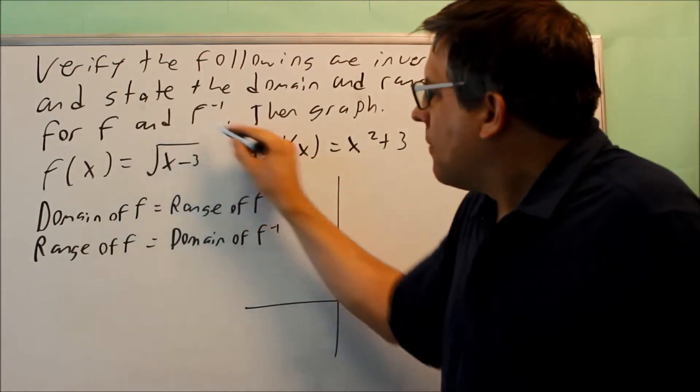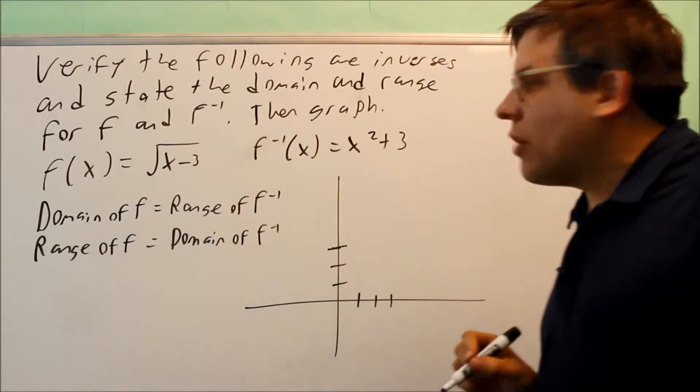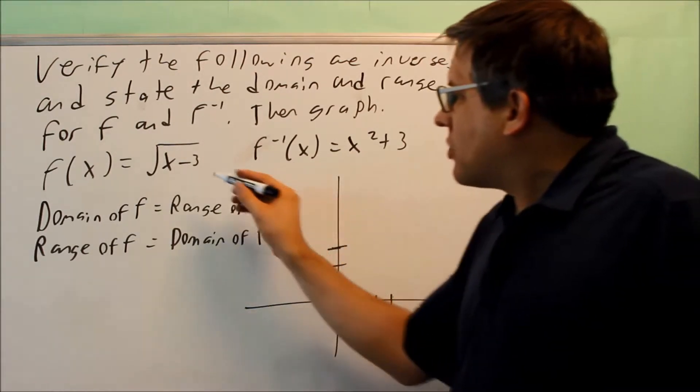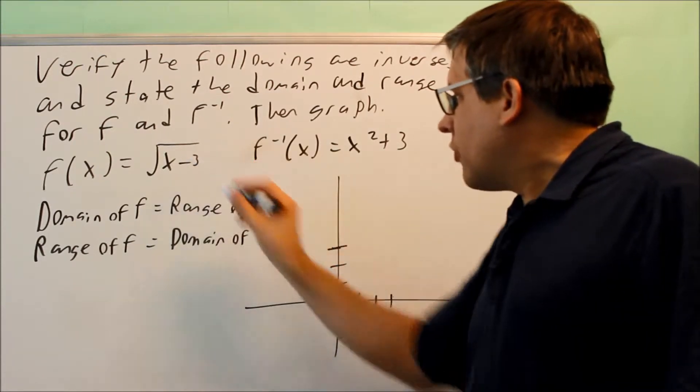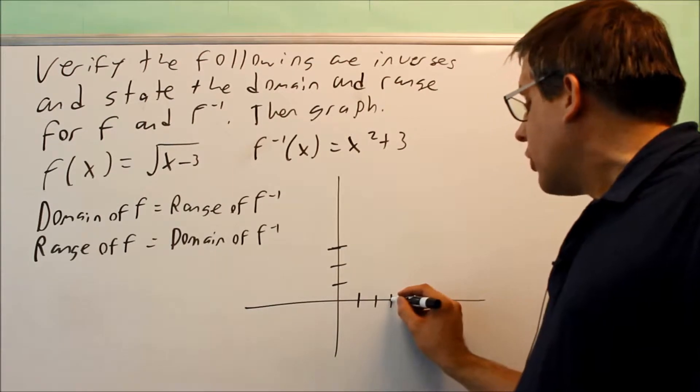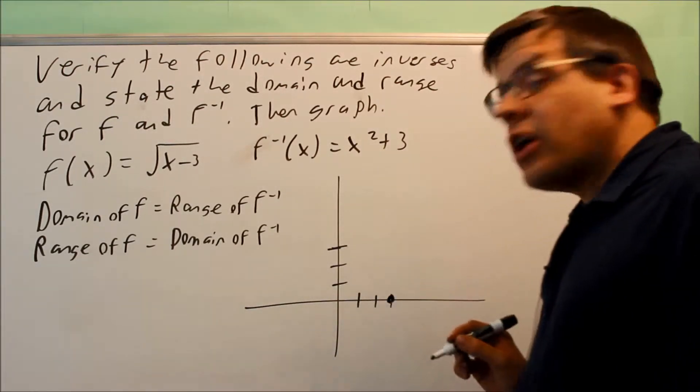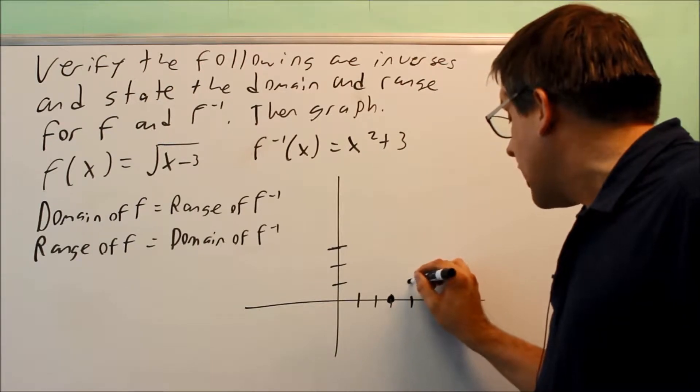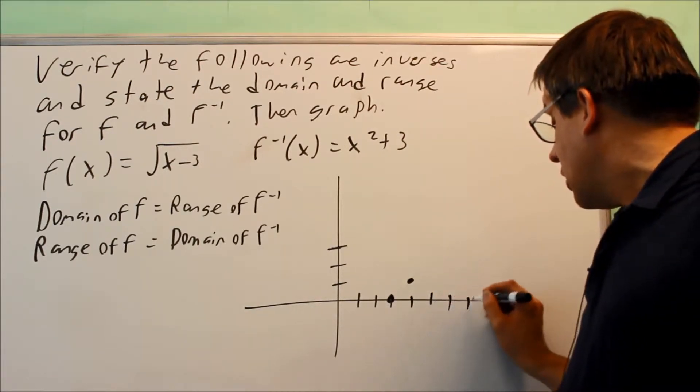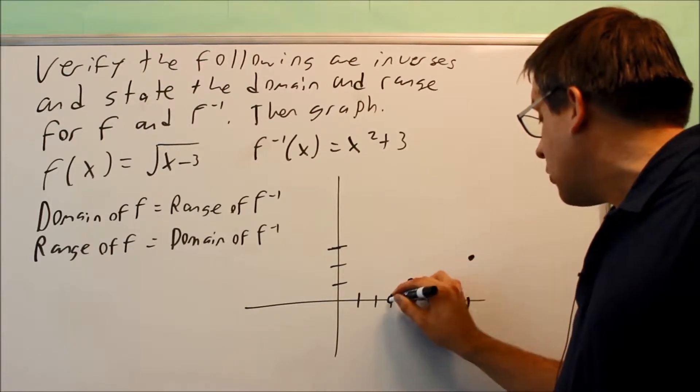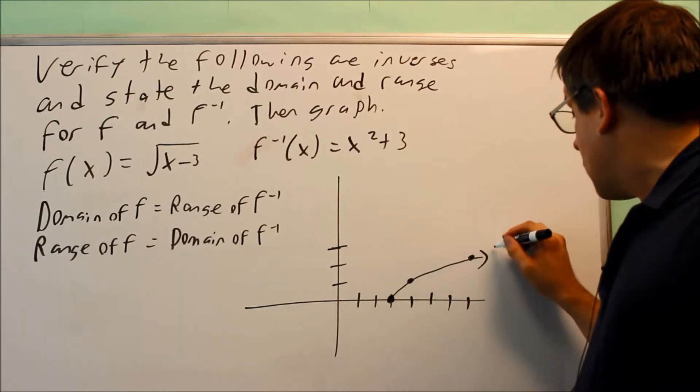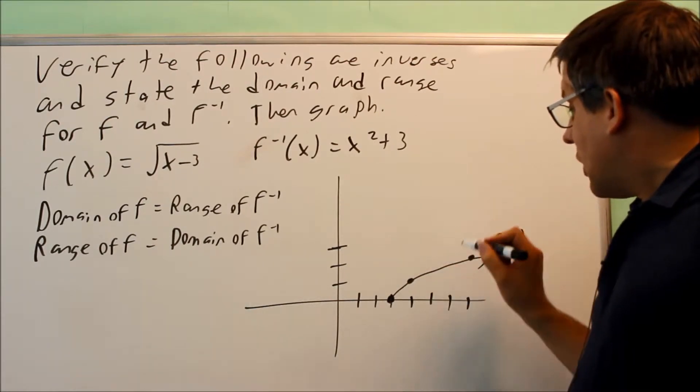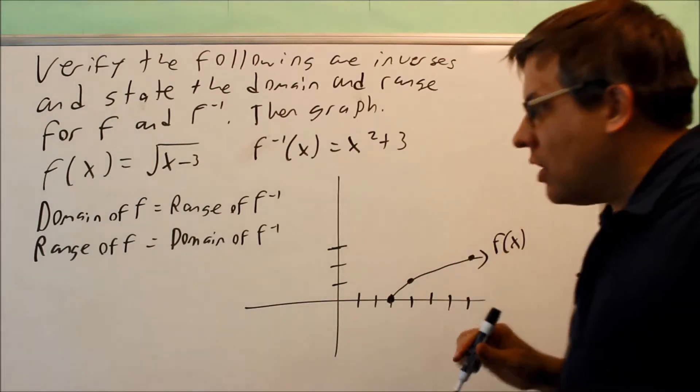So I'm going to first start by drawing, graphing the square root of x minus 3. So this goes back to the section talked about earlier on transformations. Transformations says that we start with our base graph, normally it would be at 0, and the square root of x minus 3 means we're going to move that 3 places over this way to the right. So that's going to start right here. And if we remember what our key points are for that, we're going to go up 1 and 1 to the right. And then if you want to start from here, we're going to go over 4, up 2. So this right here, this is our f of x.